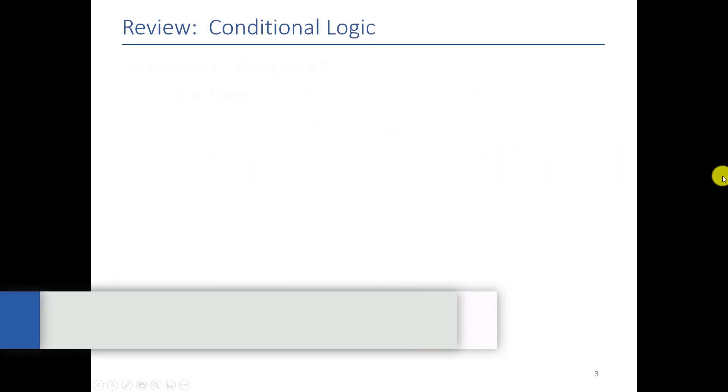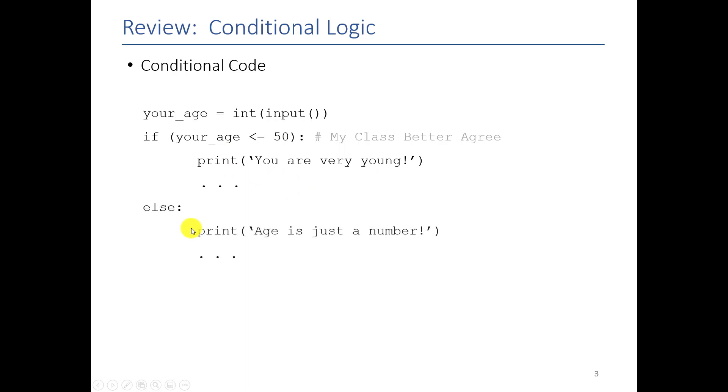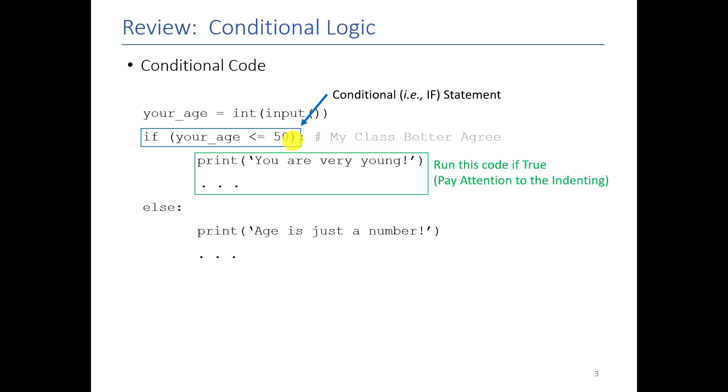As a quick reminder what we're trying to do in conditional logic is write programs that can, while they're being run, decide what code they need to execute. As an example we showed you some code where you got an age from the user and then you compare that age and if it was less than or equal to 50 you executed this set of code and otherwise you executed this other set of code. This conditional statement contains an expression that can be anything that evaluates to either true or false. If it's true it executes the code up here and if it's false it executes the code down there.